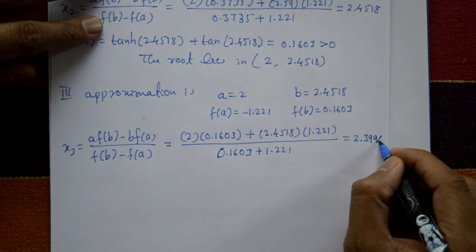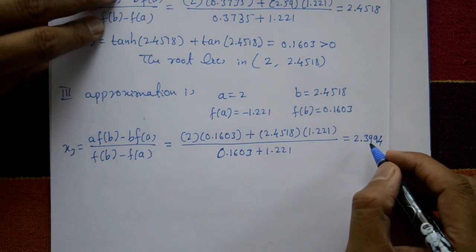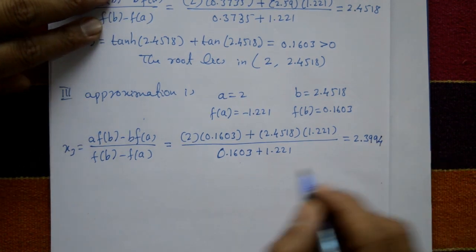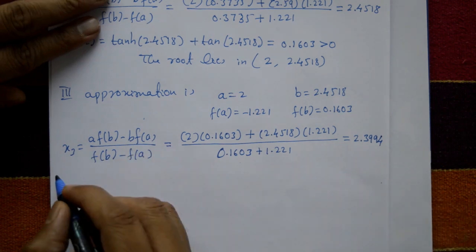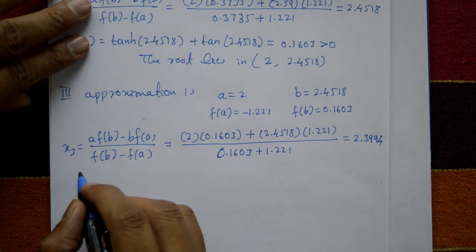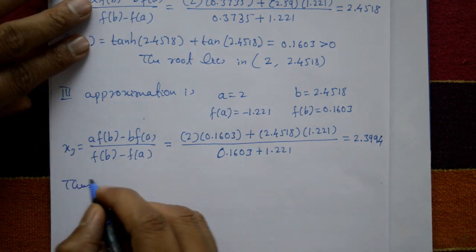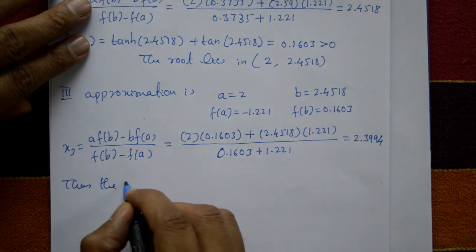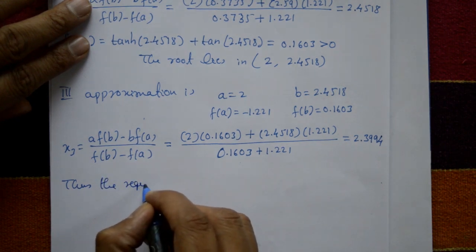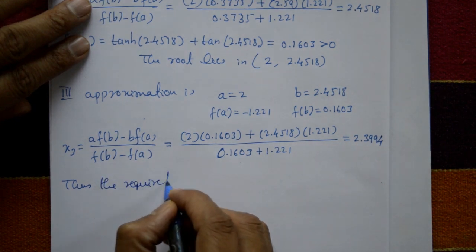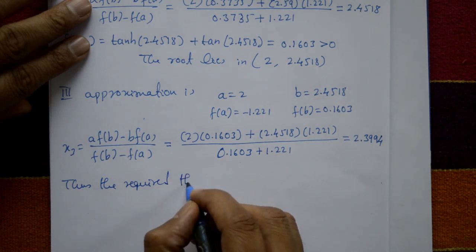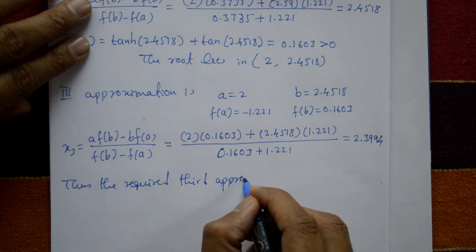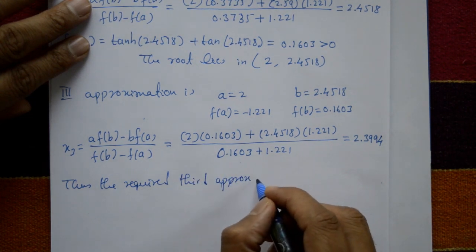The question asks for the third approximation, so we stop here. Thus the required third approximation of the root is x3 = 2.3994.